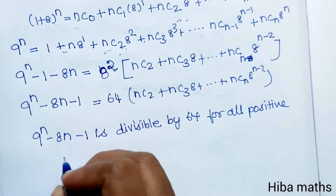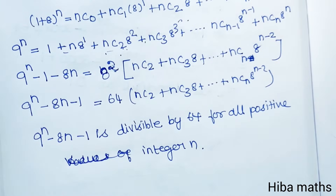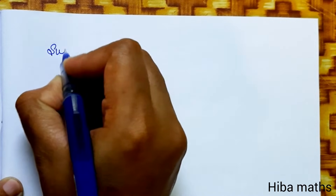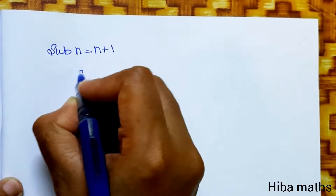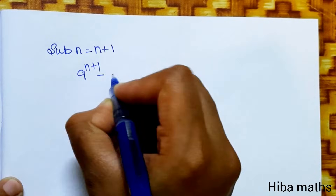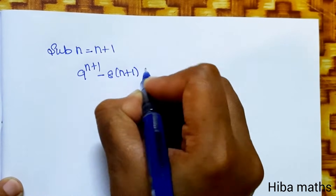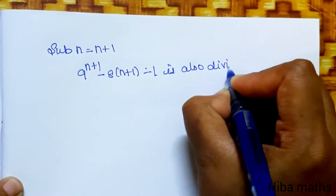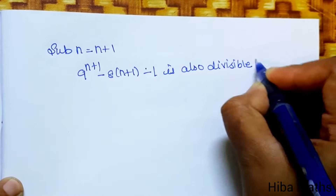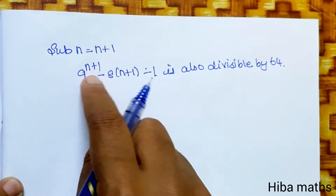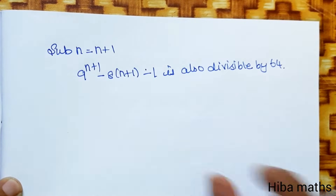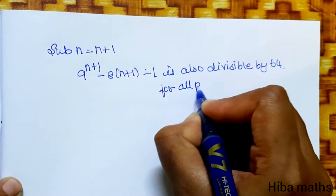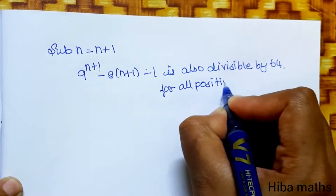Now substitute n equal to n plus 1. Then 9 power n plus 1 minus 8 into n plus 1 minus 1 is also divisible by 64. Since n replaced by n plus 1 still satisfies divisibility by 64, it holds for all positive integers n.